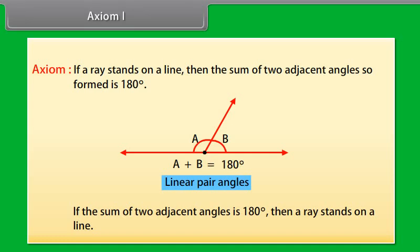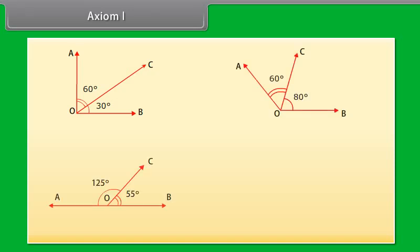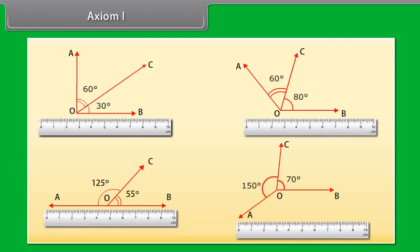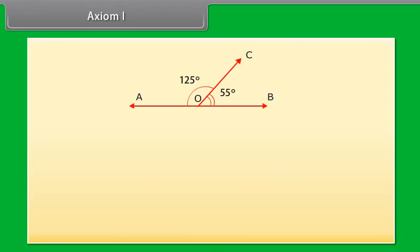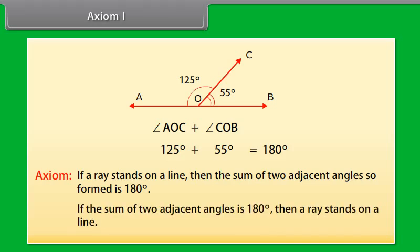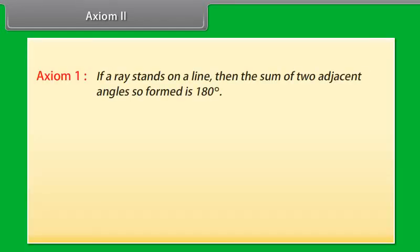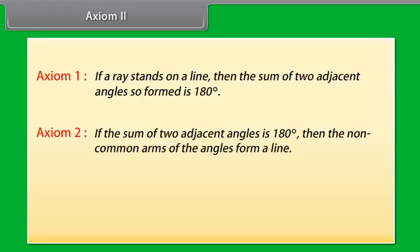Let us now check whether this statement is true. Draw adjacent angles of different measures and keep the ruler along one of the non-common arms in each case. You will find that only in one figure both non-common arms lie along the ruler — that is, points A, O and B lie on the same line and ray OC stands on it. We can see that angle AOC plus angle COB equals 125 degree plus 55 degree, which equals 180 degree. So we may conclude this statement is true. This gives us Axiom 2: if the sum of two adjacent angles is 180 degrees, then the non-common arms of the angles form a line. These two axioms together are called the linear pair axiom.